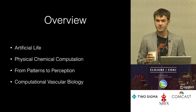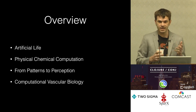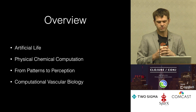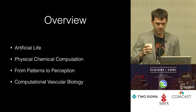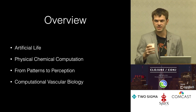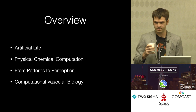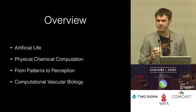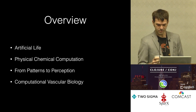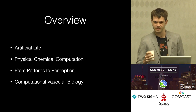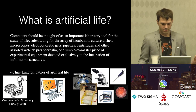I'm going to tell this as four stories. First, we'll go through artificial life. Then a physical chemical computer that we've just recently finished. Third, connecting patterns to perception of a visual system that is starting to connect to Clojure now. And fourth, computational vascular biology. Clojure was used fairly heavily in all of these except the physical chemical computer, which I just think people here would find interesting.